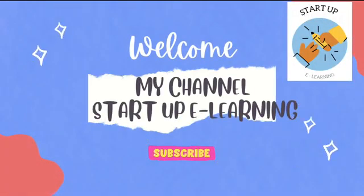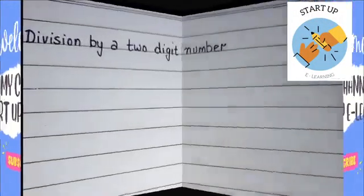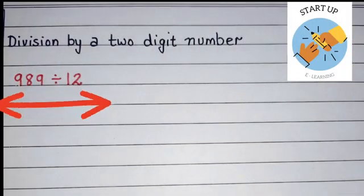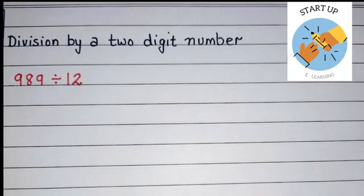Hey kids, welcome to my YouTube channel Startup E-Learning. In this video, we will learn division by a two-digit number. See this example: 989 divided by 12. Here, 989 is the dividend and 12 is the divisor.